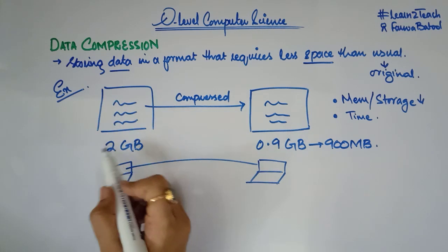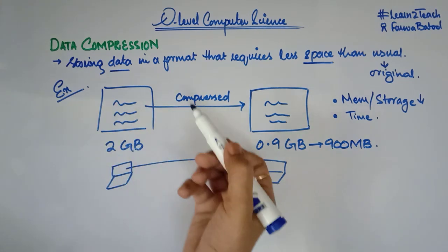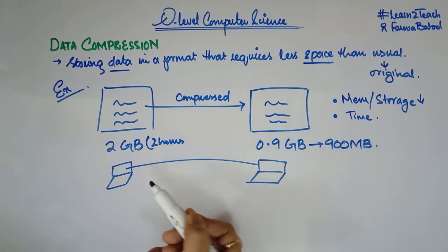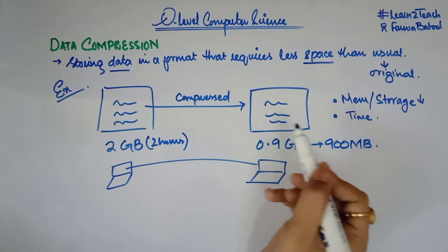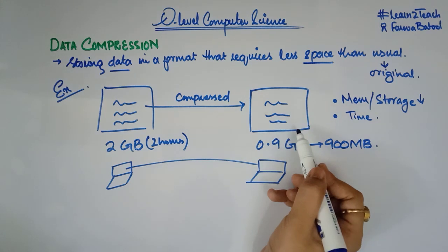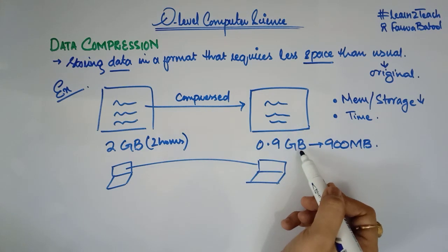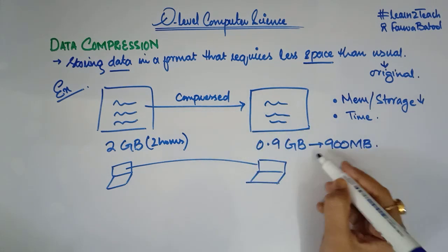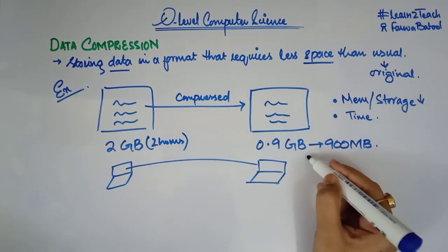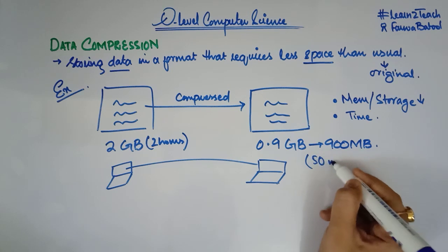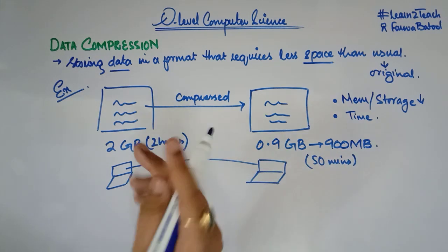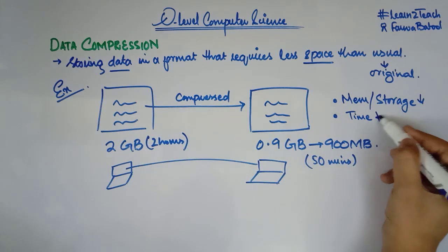The second reason we use data compression is because it also minimizes the time. If we talk about networking or communication, transferring a file that is 2 GB from one computer to another can take more time — let's suppose 2 hours. But when it has been compressed and the file size has been reduced, it is going to take lesser time to transmit, maybe just 15 minutes.